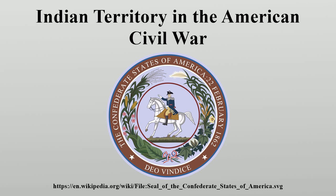Weir's troops captured a Confederate supply train at the Battle of Locust Grove. However, no Union supplies arrived after that, and the expedition ran short of food, ammunition and other essentials. Weir's men mutinied, arresting Weir and putting Colonel Frederick Salomon in command.